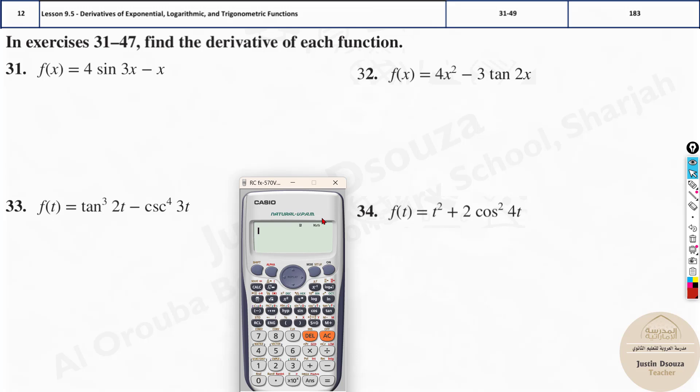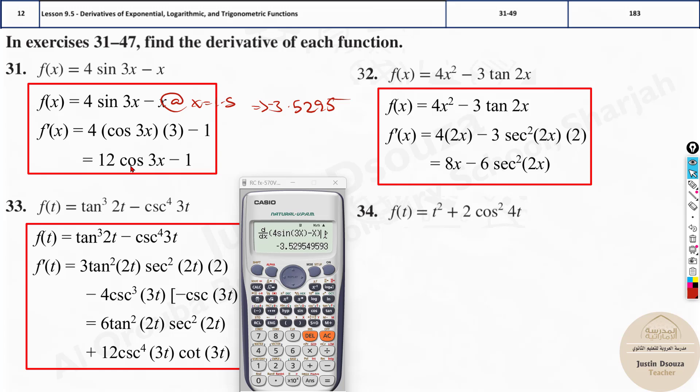So now that it's in radian, you can start solving any of these problems. Let's try this one with tangent. First, press shift d by dx and derive 4 sine 3x, just type it as it is, minus x. What is the x value? Let's assume 1.5. We get at x equals 1.5 it's negative 3.5295. Now look into all the options. Here is the answer.